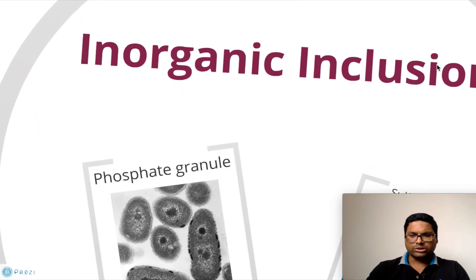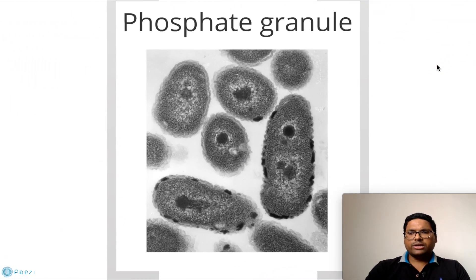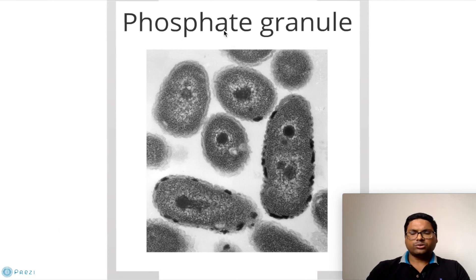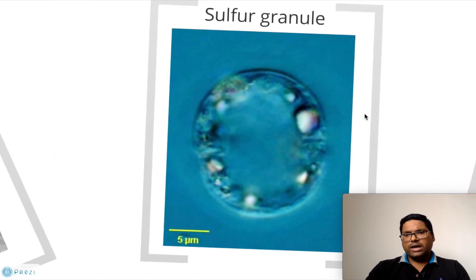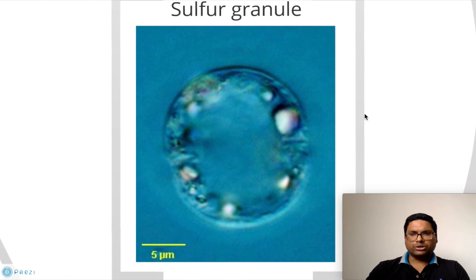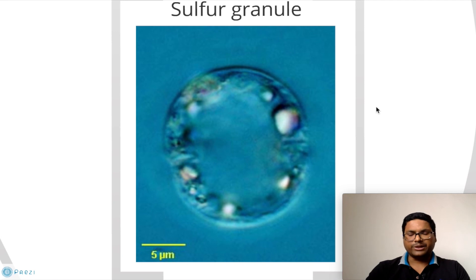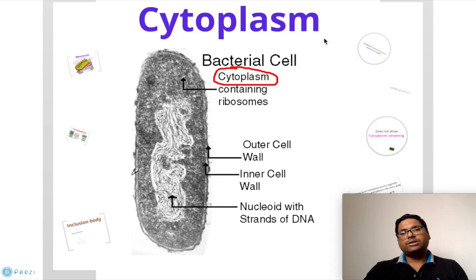Inorganic inclusions consist of inorganic minerals like phosphates. As seen in the diagram, phosphate granules are stored within the bacteria. They are also used for the storage of sulfur, and sulfur granules can be seen present inside the bacteria.